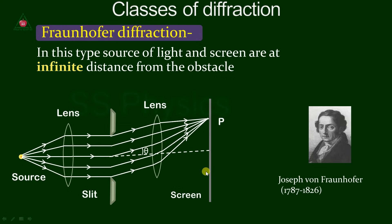On the screen you will see the diffraction pattern for a single slit: maximum intensity at the center, then zero intensity — that is the minima — then again maximas and minimas and so on.